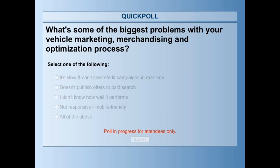What are the biggest problems with your vehicle marketing, merchandising, and optimization processes today? Is it slow — can't create or edit campaigns in real-time? Does it not publish offers to paid search? Can I change my special on a Jeep Cherokee and have that transactional data go into paid and organic? If you can't, you're in trouble. I don't know how well it performs, I can't track it. Anyone using the word 'proprietary' in reporting is using fraudulent data.